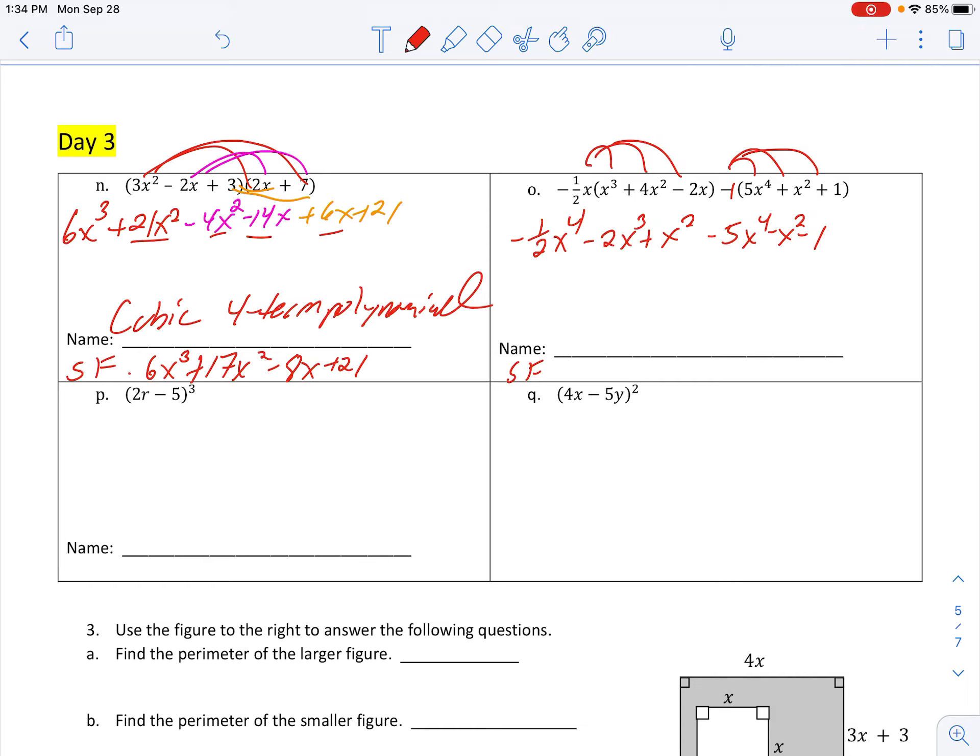Negative 1 half minus 5. Those pesky fractions. That is negative 5 and a half. I prefer to write it as an improper, so I believe it's negative 11 halves x to the fourth. Minus 2x to the third. x squareds cancel out. Minus 1. Fourth degree, or sometimes called a quartic trinomial.